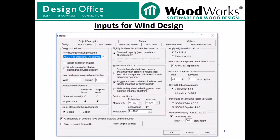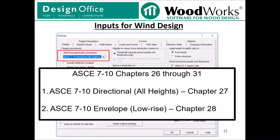This is Part 2 of the presentation, where we will discuss the various inputs for wind design. In the design settings tab, you have the option of generating wind loads following either the directional all heights method or the envelope low rise method. Both these methods come from ASCE 7-10: the directional method from chapter 27 and the envelope method from chapter 28.